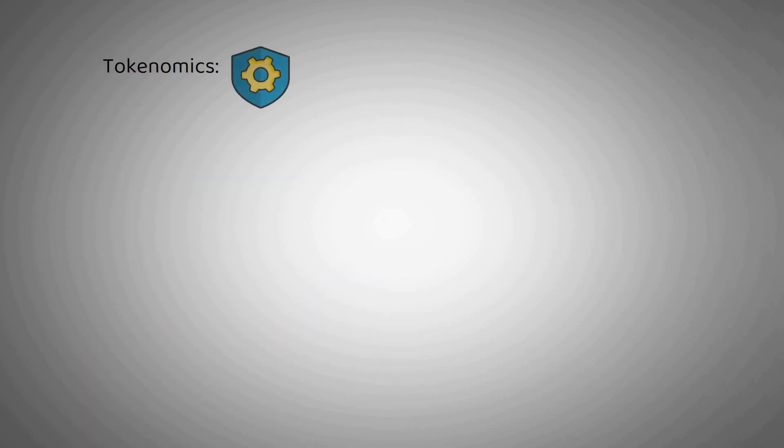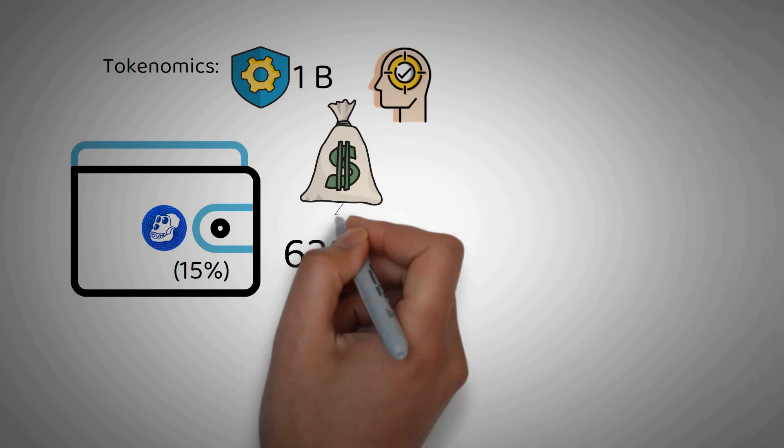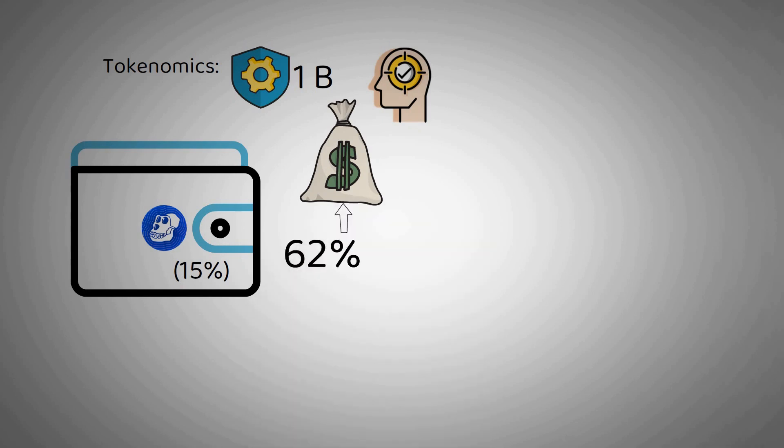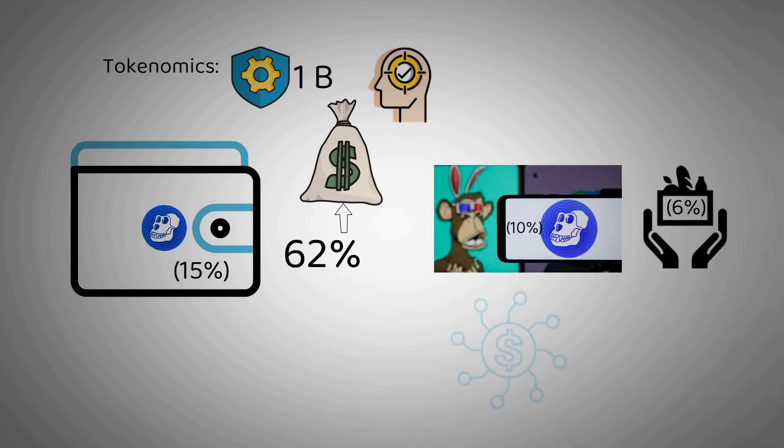Tokenomics. Ape is a fixed supply of 1 billion tokens with no inflation or burn. Distributions are concentrated in the ecosystem fund, with healthy allocations to BAYC or MAYC holders, 15%. In total, 62% goes to the entire ecosystem. The remainder is Yuga Labs 10%, Charities 6%, Launch Contributors 14%, and Founders 8%.